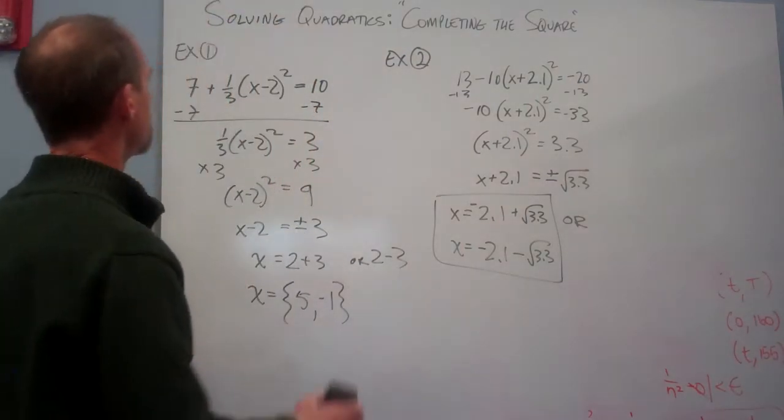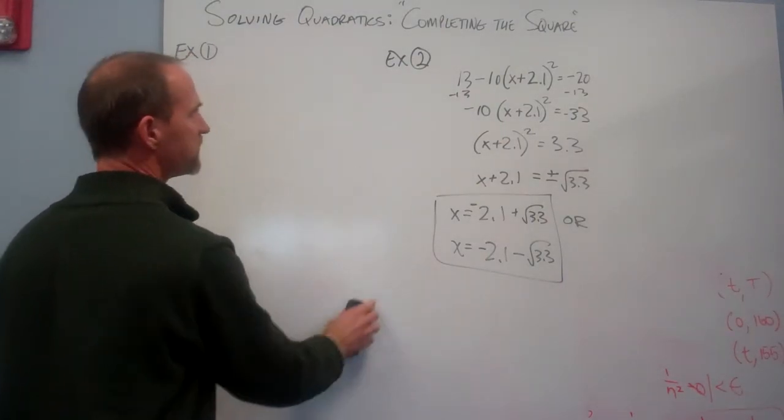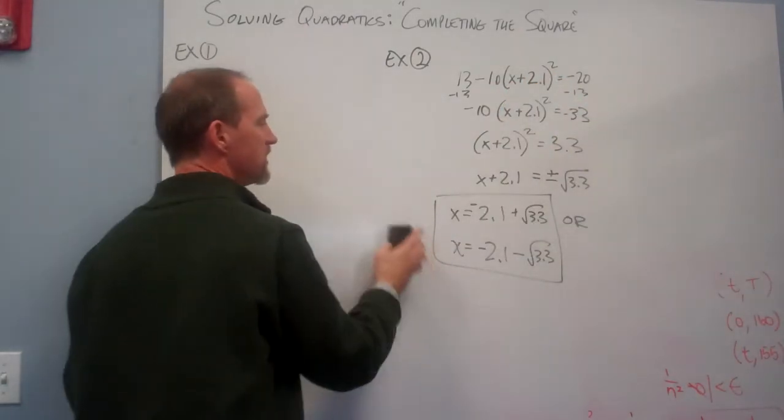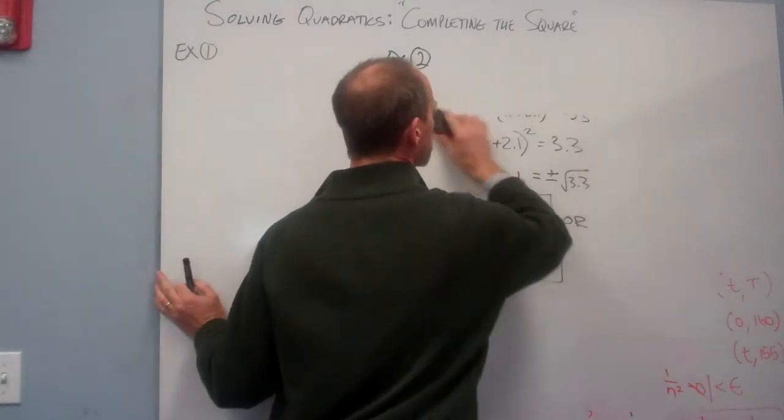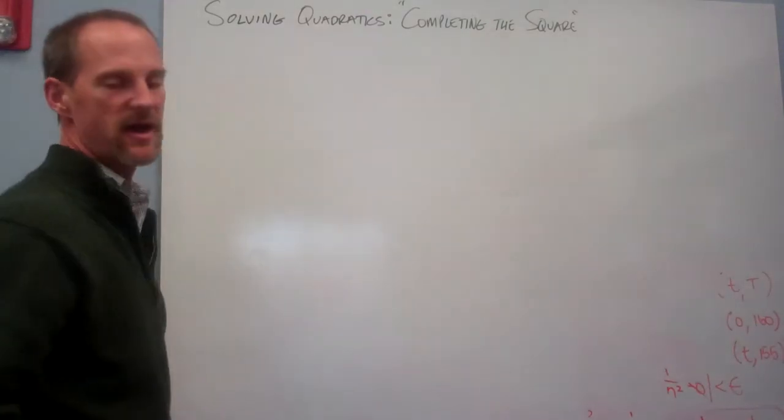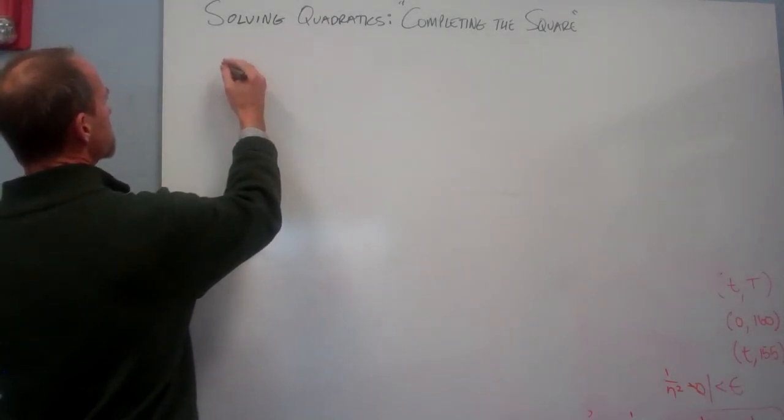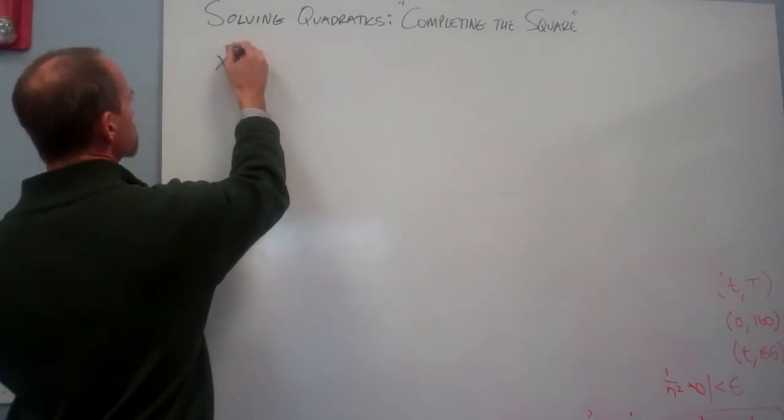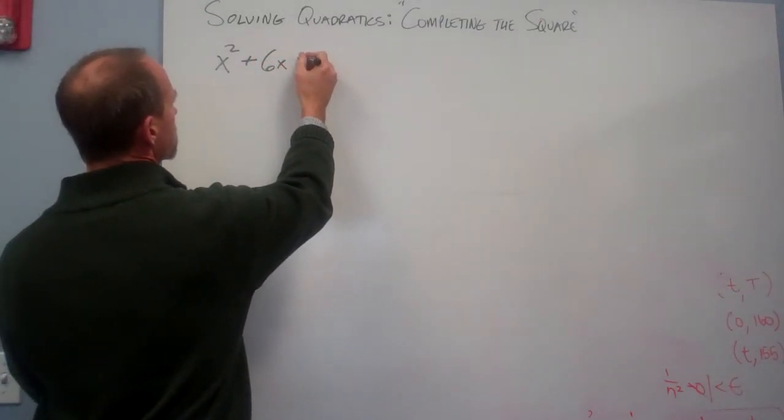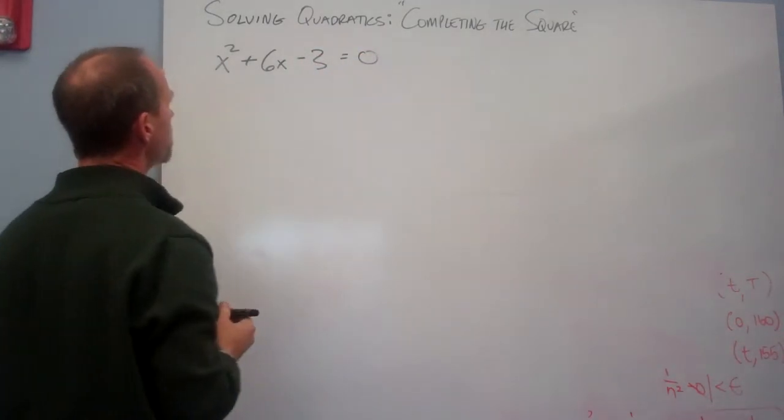Well, what happens if I'm given a problem and it isn't written in this perfect form where x only appears once in parentheses with a square notation out there? What do I do then? So we are going to learn to solve these by the completing the square technique. So for instance, if I had something like x squared plus 6x minus 3 equals 0. All right.